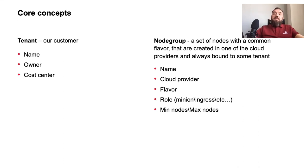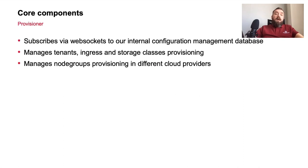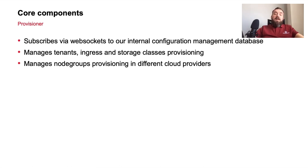For Node Groups we also introduced a concept called Role — a predefined template. For example, for an ingress role we install and configure an ingress controller on each node in the node group. We also have min nodes and max nodes to support autoscaling. We have a set of core components to implement these concepts. The first is called Provisioner — our internal component in charge of provisioning everything. It subscribes via WebSockets to our internal configuration management database where information about tenants and node groups is stored, and manages tenant ingress and storage class provisioning as well as node group provisioning in different cloud providers.